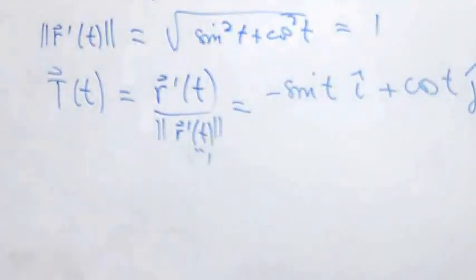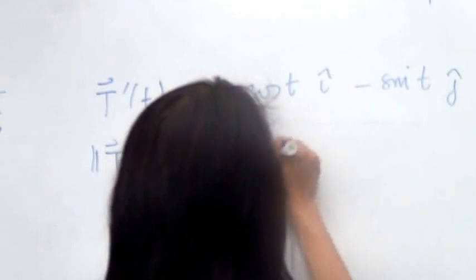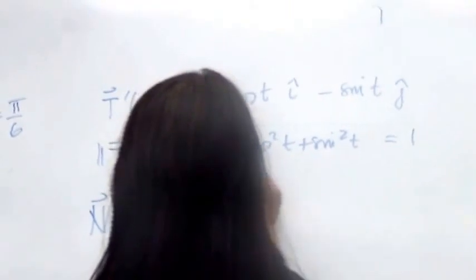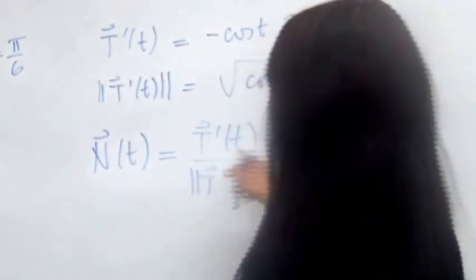Now we need N of t. To get N of t, we need the derivative of T. The derivative of T of t is negative cosine t i minus sine t j. And again, if we get the magnitude of T prime of t, it's also going to be 1. Therefore, the unit normal vector — defined as a scalar multiple of the derivative of the tangent vector — is just the derivative of the tangent vector itself, which is negative cosine t i minus sine t j.